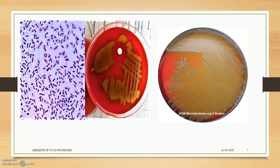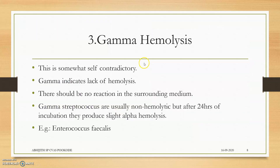Examples of bacteria showing alpha hemolysis are Streptococcus pneumoniae and Streptococcus mutans. The colonies of Streptococcus pneumoniae are not very clear, but the bruising of cells produces a greenish-brown color around them.